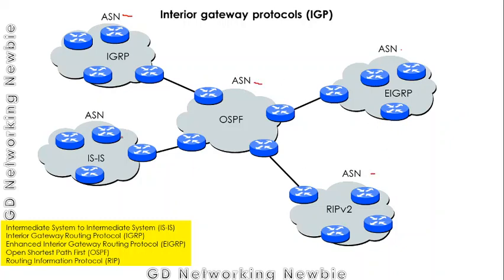Within each autonomous system, we can have multiple routers, and those routers must use routing protocols to find the best path to send information among each other. All routing protocols used within a single autonomous system are known as interior gateway protocols.